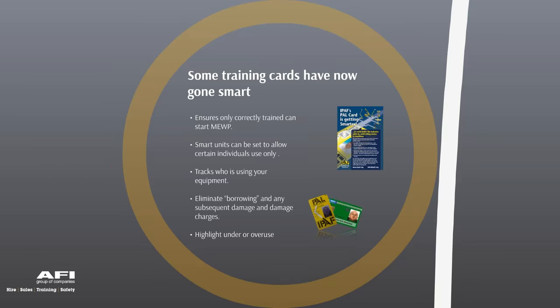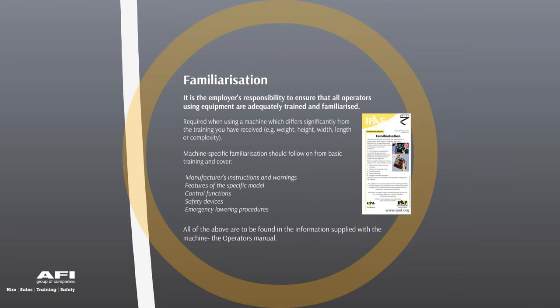After training the operator, you still have a legal responsibility to provide familiarization. Machine-specific familiarization should follow on from basic training and must cover: the manufacturer's instructions and warnings, what features and control functions the machine has, what safety devices are fitted, and how to bring it down in an emergency. All of this is found in the operator's manual, which is typically located in the platform.